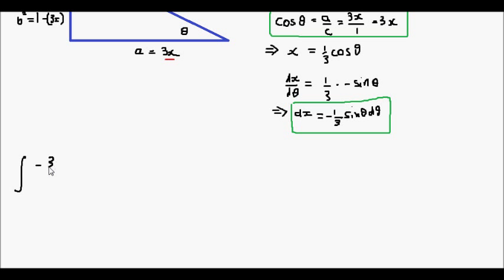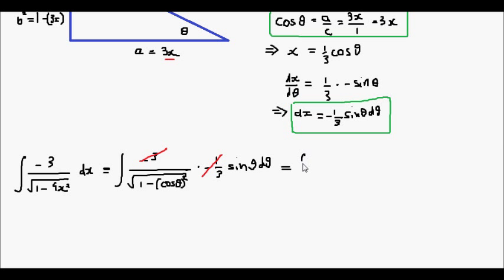So the integral of negative 3 divided by the square root of 1 minus 9x squared with respect to x can be rewritten as the integral of negative 3 divided by the square root of 1 minus cos θ squared times negative 1 third sin θ dθ. If I neaten this up, the negative 3 and the negative 1 third cancel out, and I'm left with the integral of sin θ divided by the square root of 1 minus cos squared θ dθ.